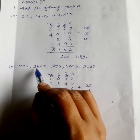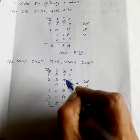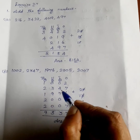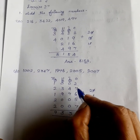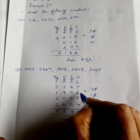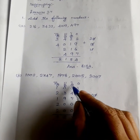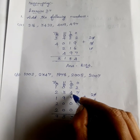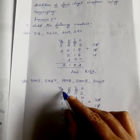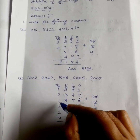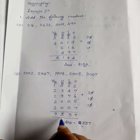Next: 1,002, 2,347, 1,976, 2,005, 2,007. 2 plus 7 is equal to 9. 9 plus 6 is equal to 15. 15 plus 5 is equal to 20. 20 plus 7 is equal to 27. Remaining 2. 2 plus 4 is equal to 6. 6 plus 7 is equal to 13. Remaining 1. 1 plus 3 is equal to 4. 4 plus 9 is equal to 13. Remaining 1. 1 plus 1 is equal to 2. 2 plus 2 is equal to 4. 4 plus 1 is equal to 5. 5 plus 2 is equal to 7. 7 plus 2 is equal to 9. So answer: 9,337.